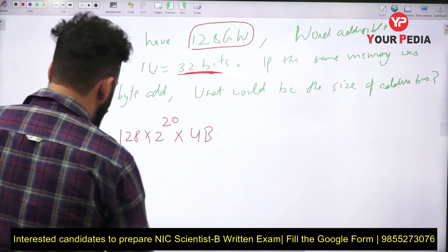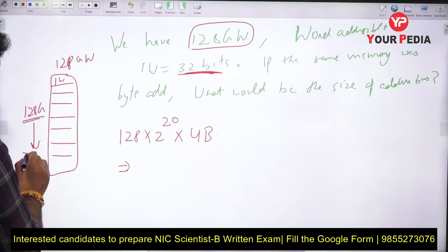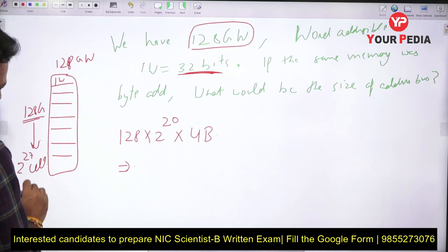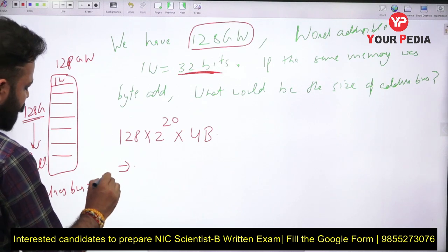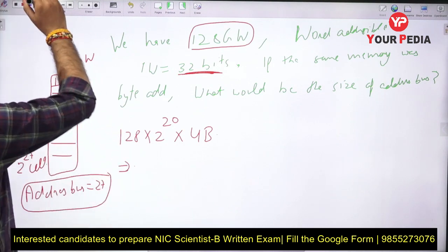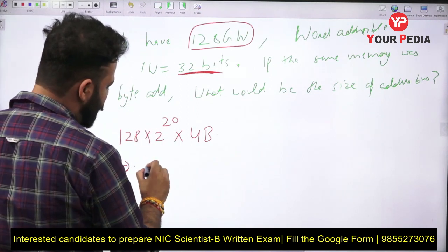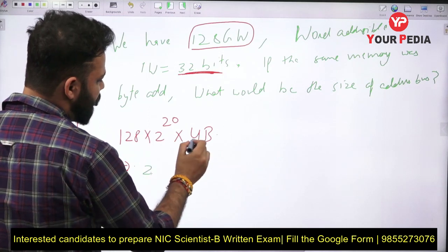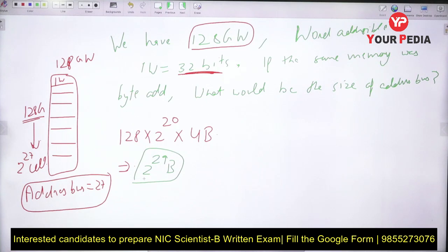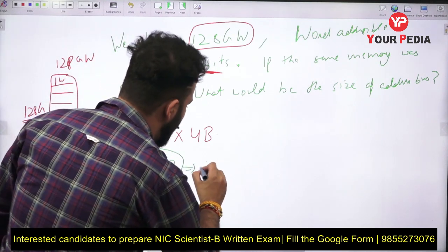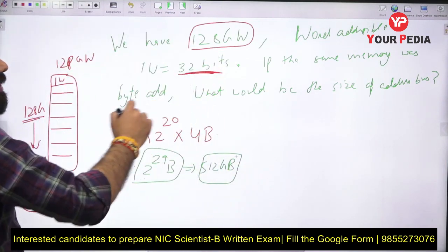So 128G cells can be written as 2²⁷ cells, meaning the initial address bus was 27 bits. Now when we convert this memory to byte addressable, the total memory size is 2²⁷ cells × 4 bytes per cell = 2²⁷ × 2² = 2²⁹ bytes. We can also write this as 512 GB — this is the same physical memory.